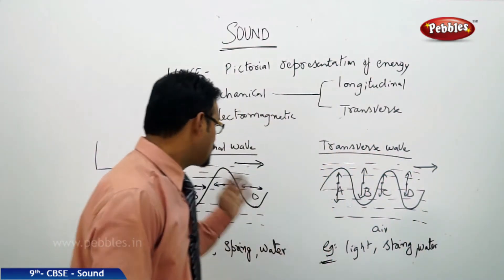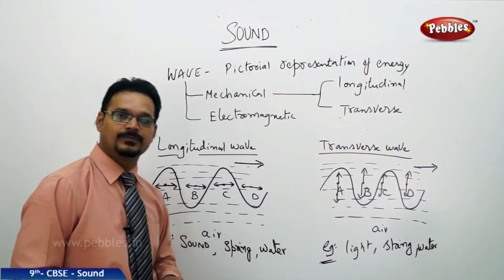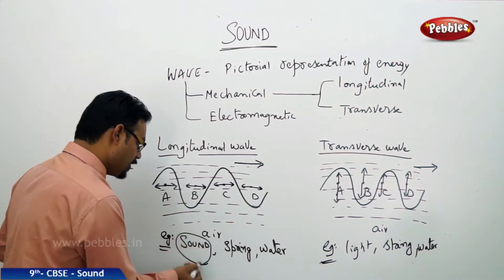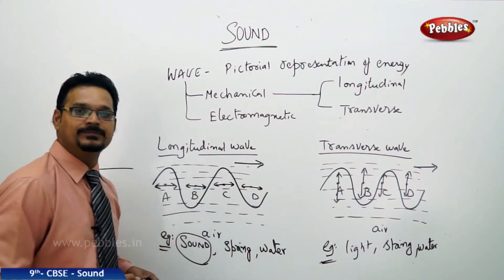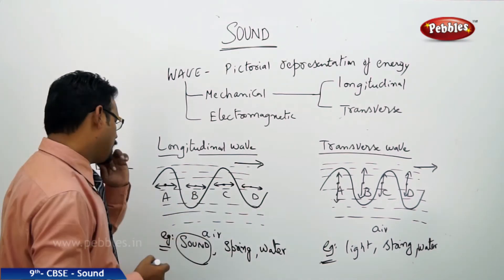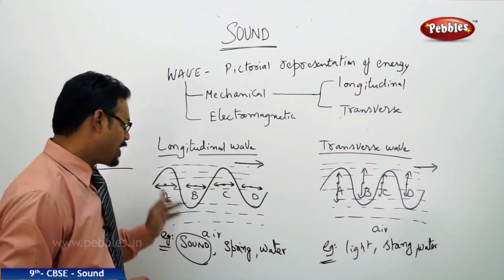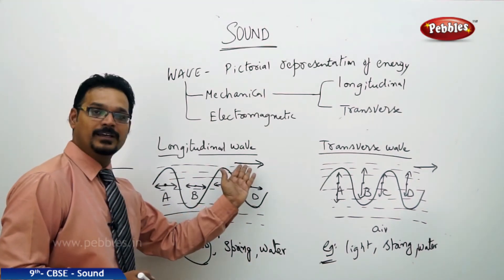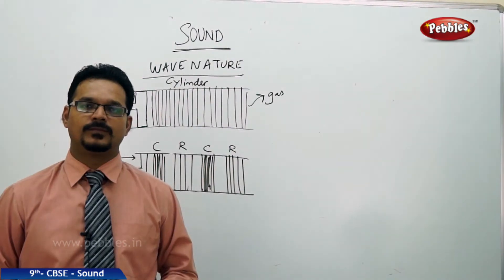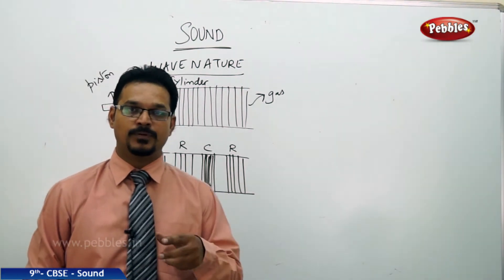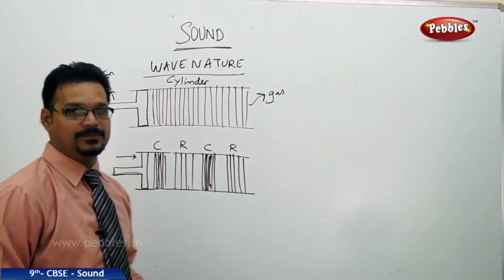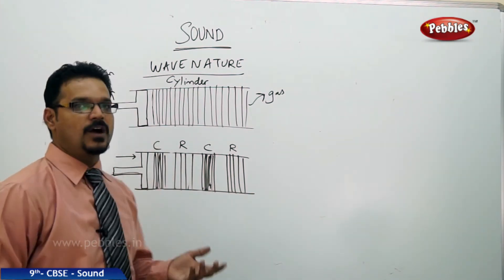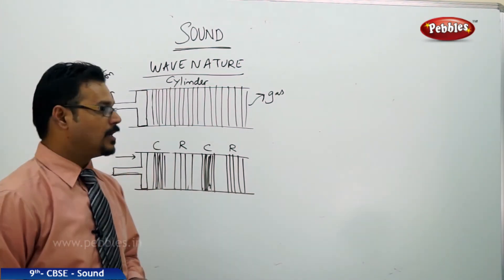You can also produce transverse waves in water. Water is a special medium where you can produce both longitudinal and transverse waves. What we understand is that sound is a longitudinal wave — when the sound wave propagates, the particles in the medium vibrate in the direction of the wave. Now let's discuss the sound concept and its wave nature in more depth.